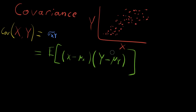Looking at the means of these distributions: the mean of x, shown in blue, is somewhere around the center of the x values. The mean of y is somewhere in the middle of the y range. So one point represents both the mean of x and the mean of y. Projecting down gives us mu of x, and projecting across gives us mu of y.